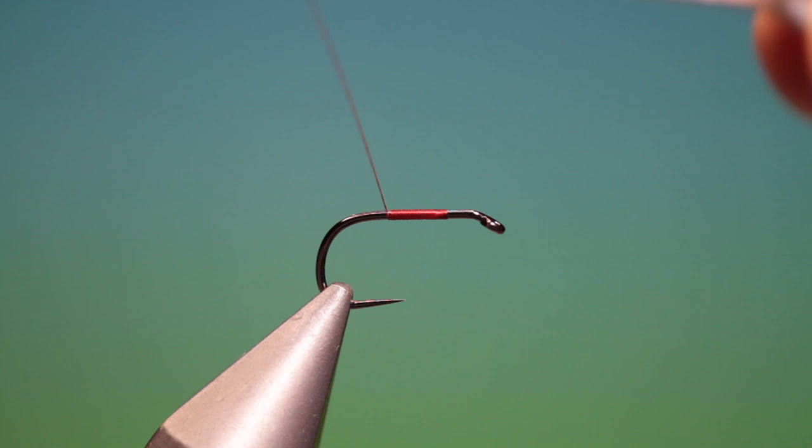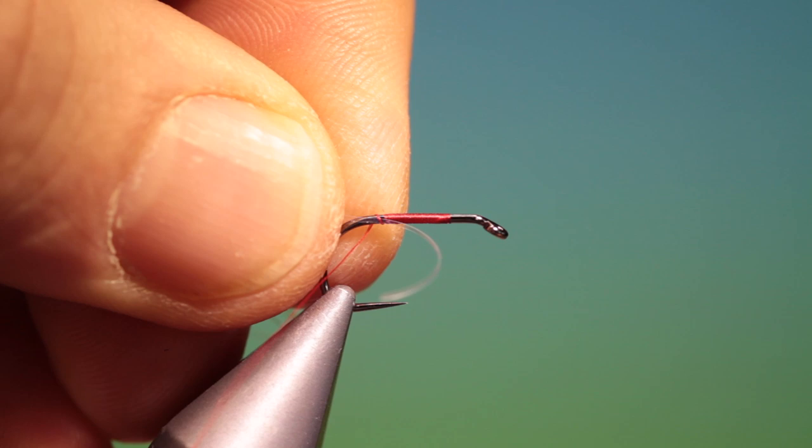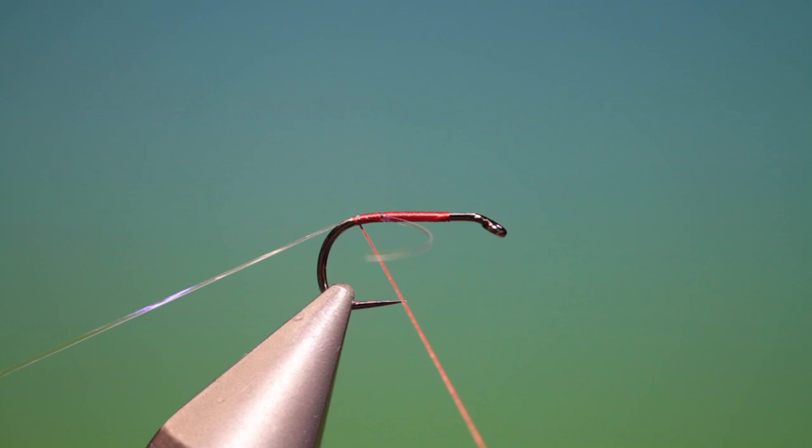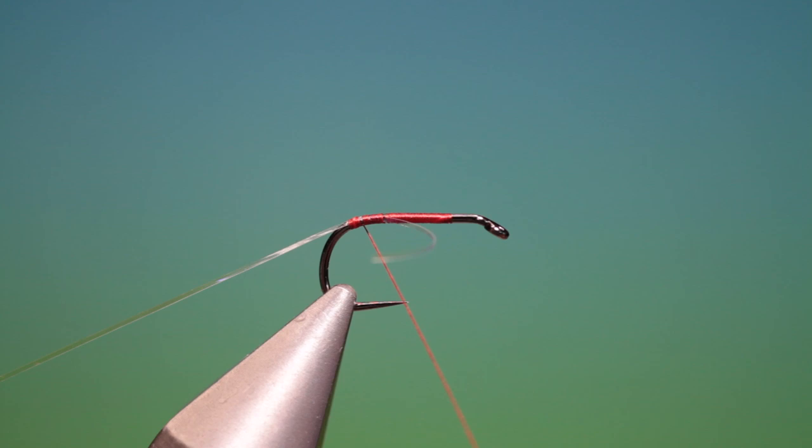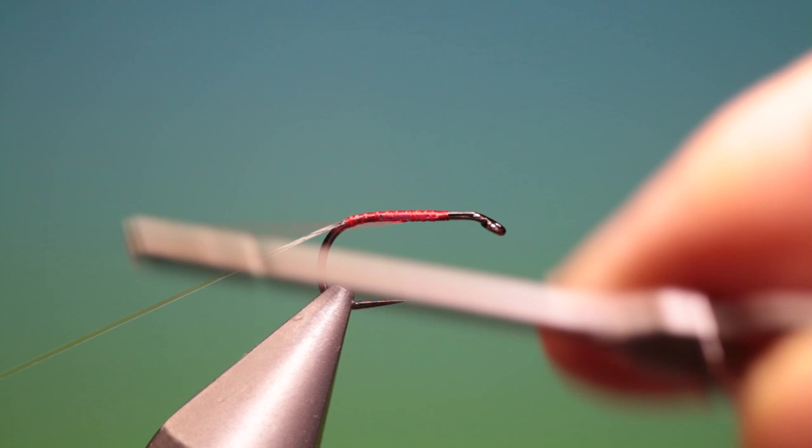Remove that. Then we have a little bit of ice blue pearl tinsel and just tack this in at the back. And go back, keep that out the way. We can trim that off. Just tack it in and go back to the rear of the hook.